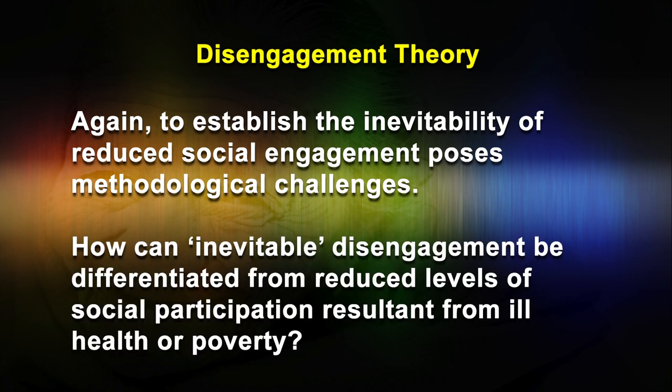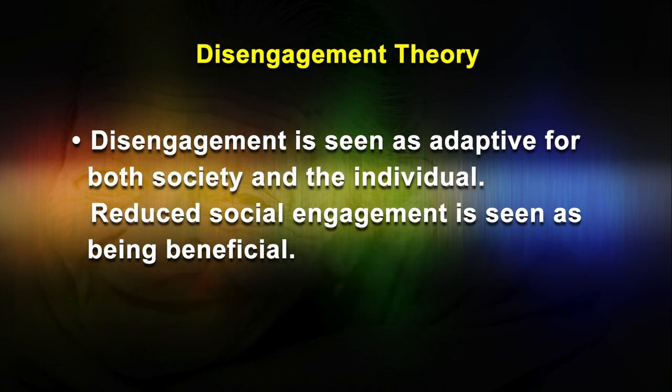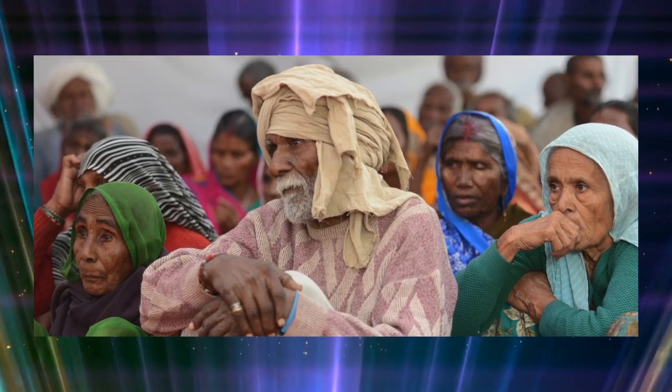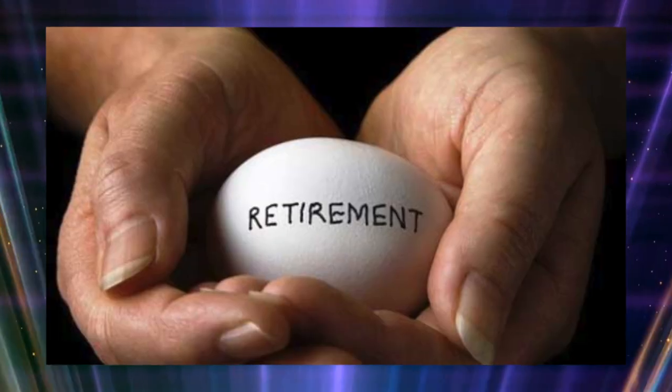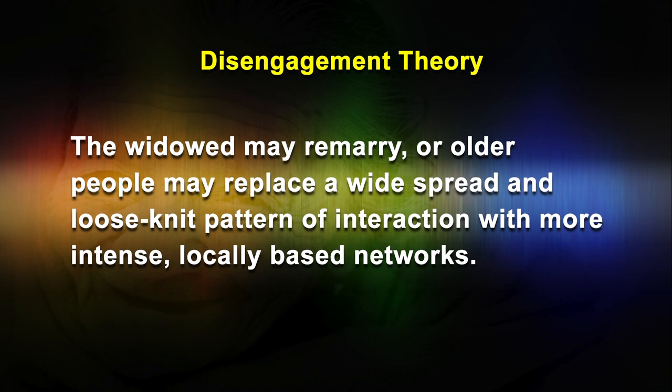How can inevitable disengagement be differentiated from reduced levels of social participation resulting from ill health or poverty? Disengagement is seen as adaptive for both society and individual, and reduced social engagement is seen as beneficial. There is some empirical evidence to support disengagement theory in that older people do experience a loss of roles with aging, whether through retirement, the death of a spouse, or the departure of older children from home. However, older people use strategies of substitution and compensation to offset losses of role. The widowed may remarry, or older people may replace widespread networks with more intense locally based ones.